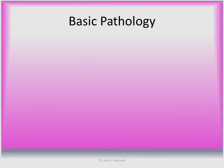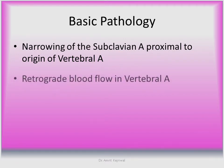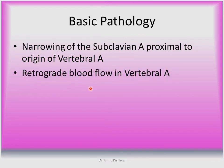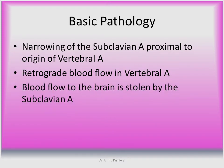Now coming to the basic pathology. Narrowing of the subclavian artery proximal to the vertebral artery exists, and there is retrograde blood flow in the vertebral artery. Blood flow to the brain is stolen by the subclavian artery, which is responsible for the neurological symptoms.